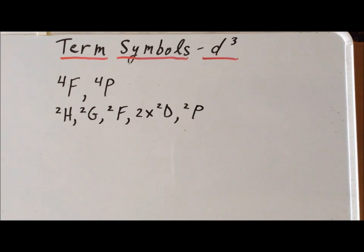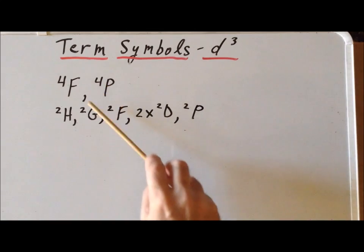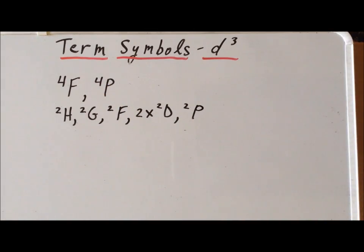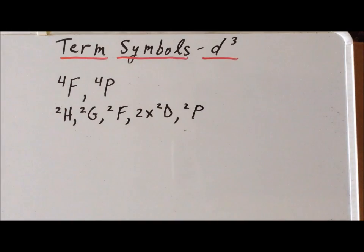Now to apply Hund's second rule, we want to maximize the angular momentum. For the P state, L equals one, and for the F state, L equals three. Since three is greater than one, that tells us that the quartet F is our ground state.